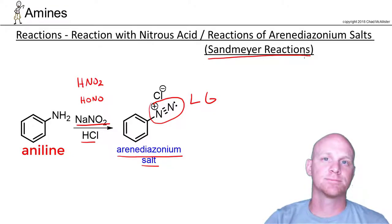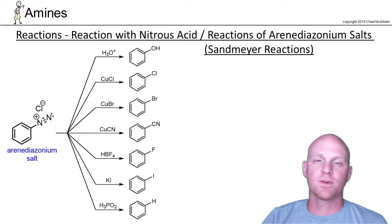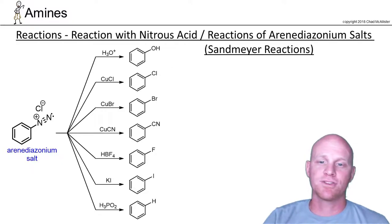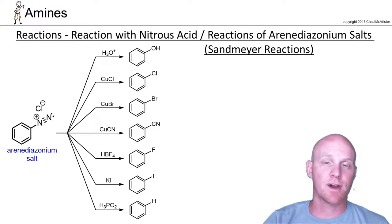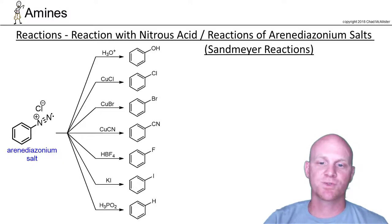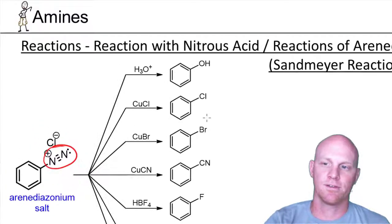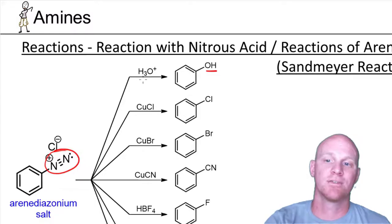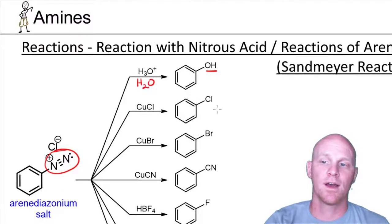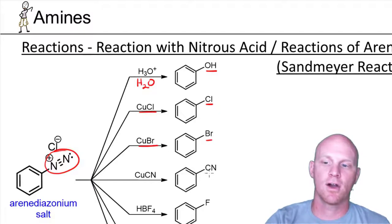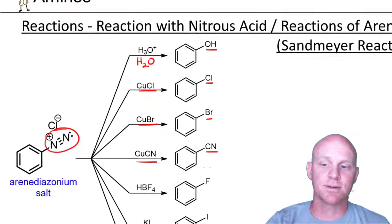In these Sandmeyer reactions, you're probably not on the hook for any sort of mechanism, and there's a lot of memorization for what you can replace this good leaving group with. You can replace it with an OH using H3O+ or simply water. You can replace it with a chlorine using CuCl, a bromine with CuBr, or a cyano group with CuCN. Those are fairly similar to each other.